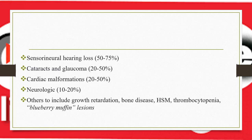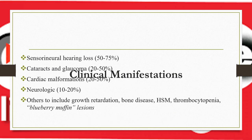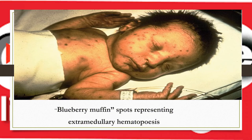Blueberry muffin is a classic lesion for congenital rubella — though it can occur in other conditions. This is a blueberry muffin skin lesion on a child with congenital rubella. It represents extramedullary hematopoiesis — spots on the skin due to hematopoiesis occurring at extramedullary sites.